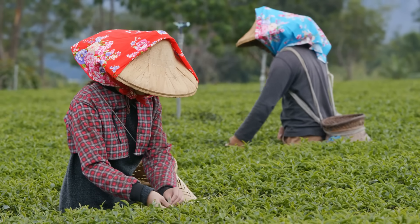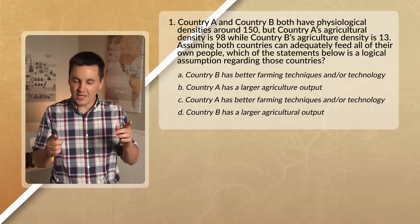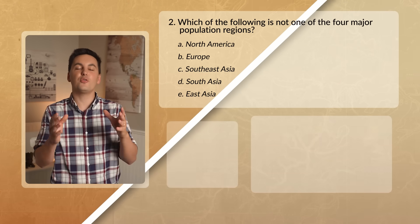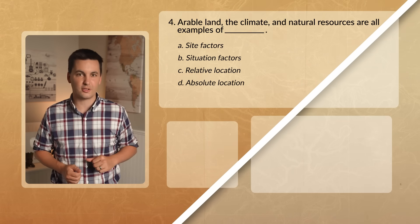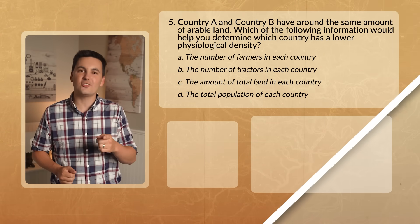Remember, if countries need more people to work in agriculture, that means fewer people working in other areas of the economy. Understanding these different densities allows us to gain insight into different geographic areas around the world. If you need more help, check out my ultimate review packet for more practice. Make sure to answer the review questions on screen and check your answers in the comment section. Don't forget to subscribe if you found value in this video. I'm Mr. Sin — thank you so much for watching, and I will see you next time.